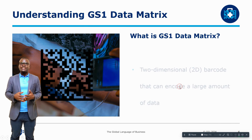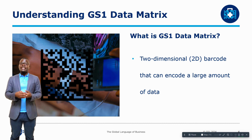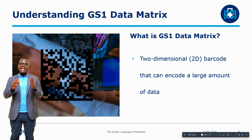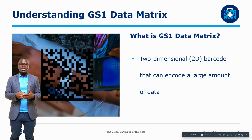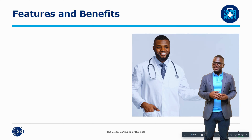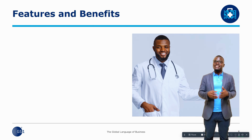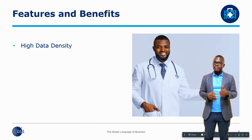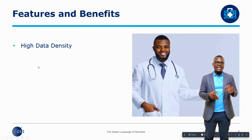Let's talk about the GS1 data matrix. GS1 data matrix is a two-dimensional format capable of encoding a large amount of data in a compact format. It is part of the GS1 system of standards, specifically designed to enhance visibility and accuracy in the healthcare sector. GS1 data matrix has several features and benefits. Number one, it has high data density, which means it is capable of storing large amounts of information such as product identifiers, batch numbers, and even the expiry date.